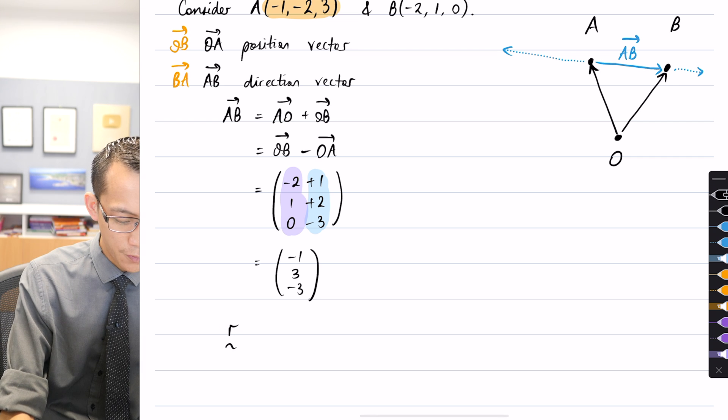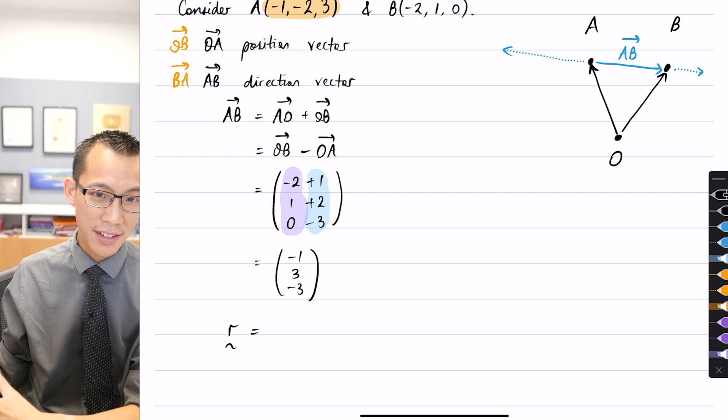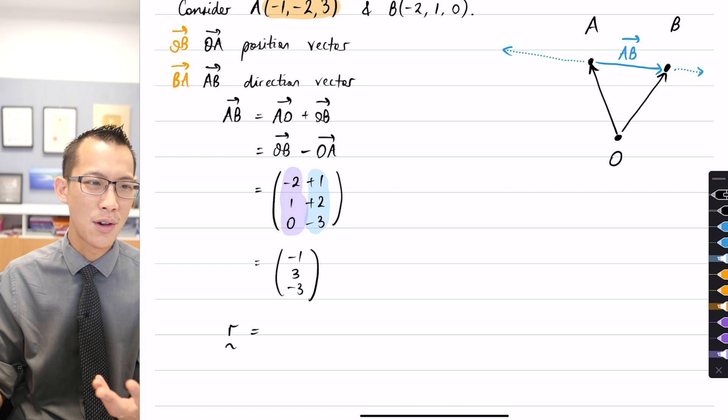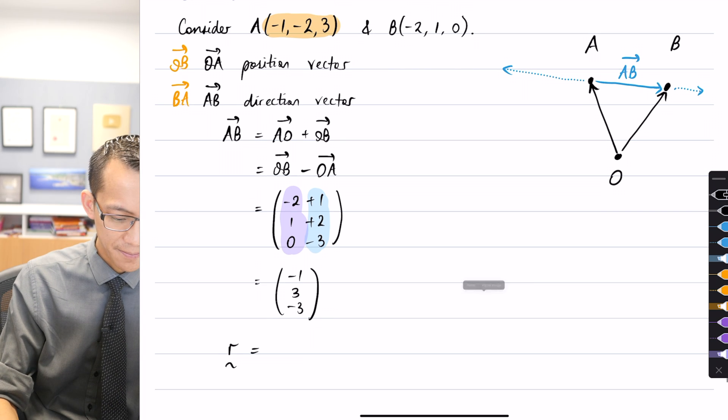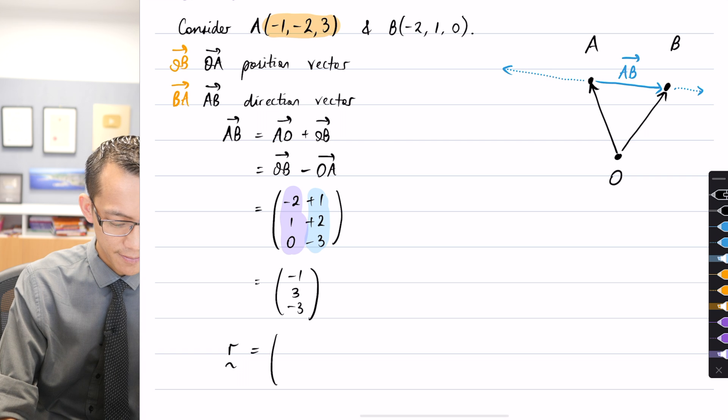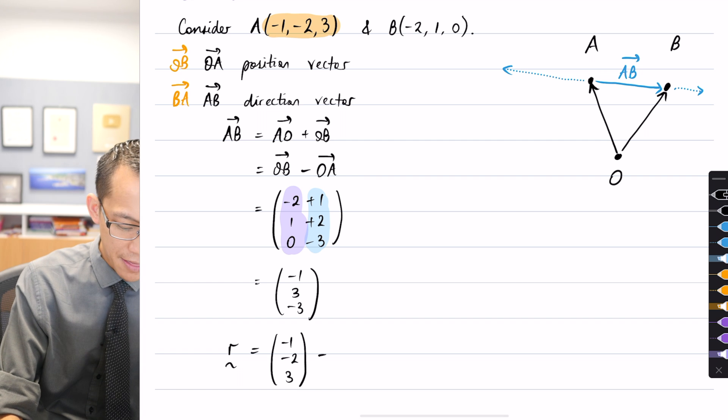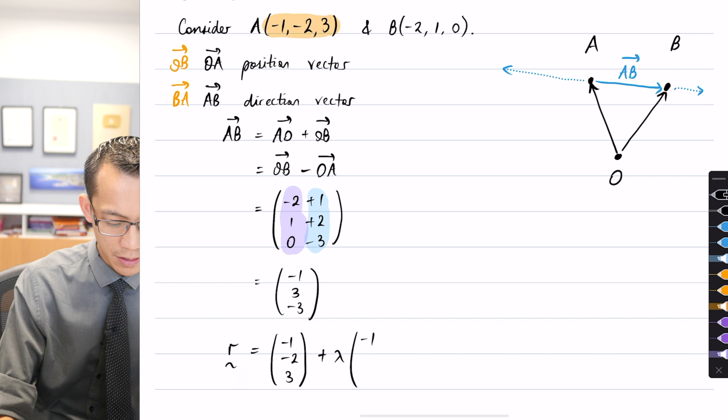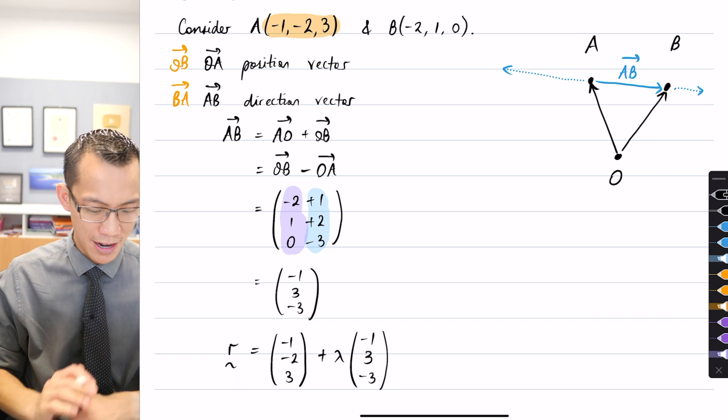So I want a line—we tend to write that as r. I'm going to put the position vector first and then add on lambda multiples of the direction vector. What was that position vector again? Yeah, fantastic, I'm just reading that off from the coordinates of A: (-1, 2, 3). Then I will add lambda of the vector we just worked out: (-1, 3, -3). That's it, happy times.